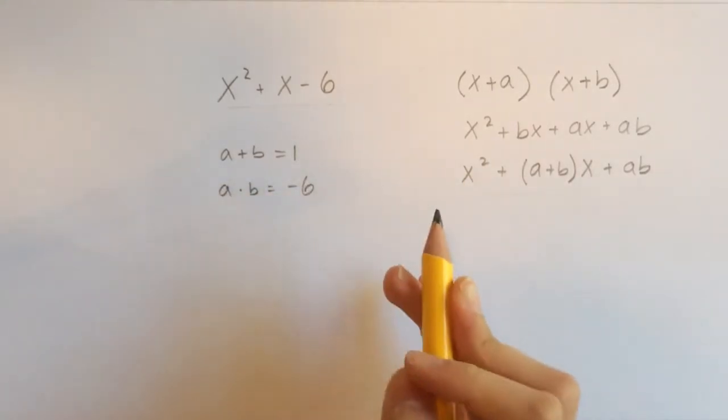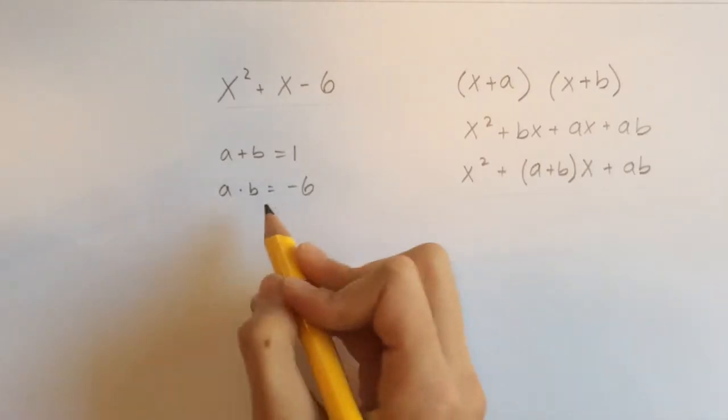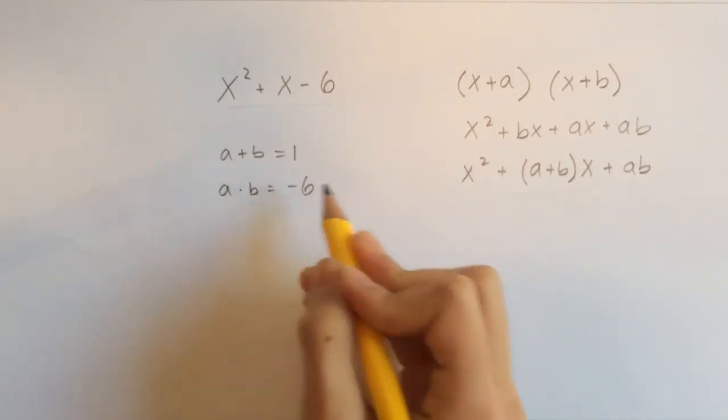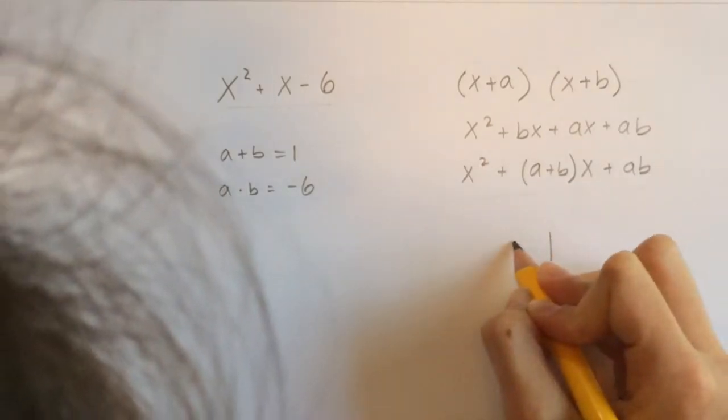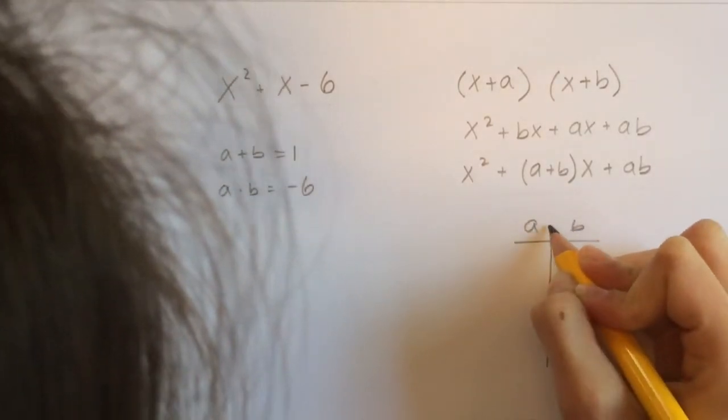Okay, so before we can do anything, what we have to do is find all the possibilities that make a times b equal to negative 6. So we have a and b.